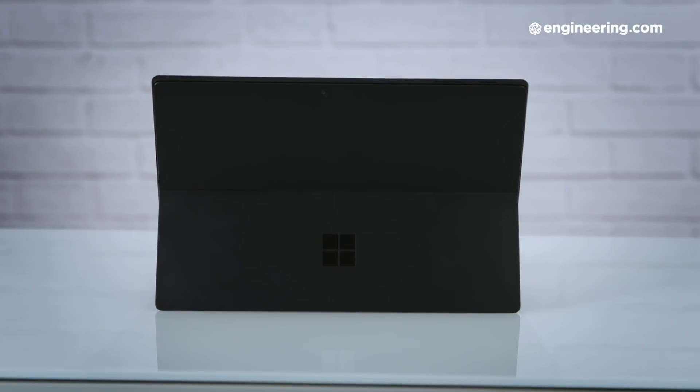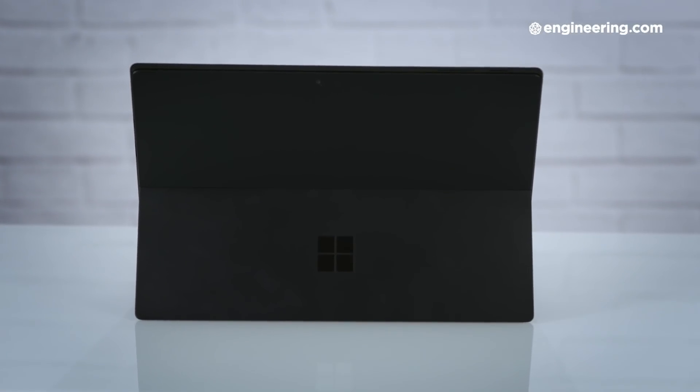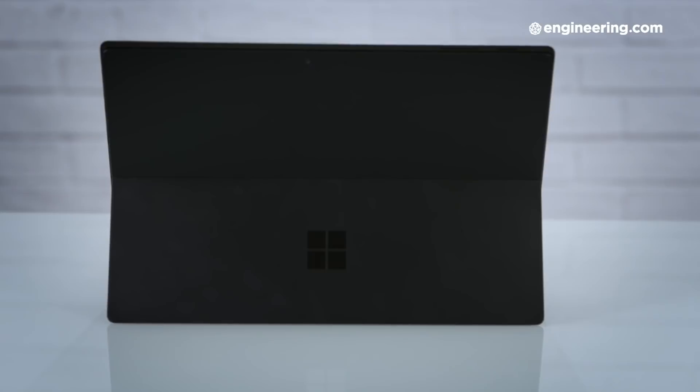The physical design of the Surface Pro 6 hasn't changed much, but Microsoft has added a new color option, the matte black we have here in our unit. It's a nice break from the long-standing Platinum, which is still available should you choose it. In fact, if you want a terabyte of storage, you have to choose it, because with black, you can only go up to 512GB for some reason. But, it's a nice change and it arguably makes the device look, if not act, a bit more professional.